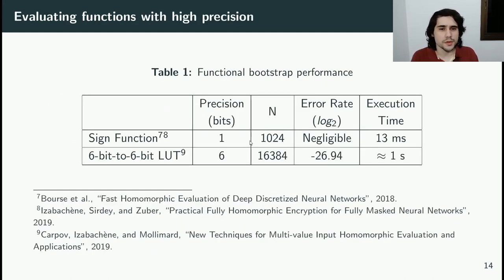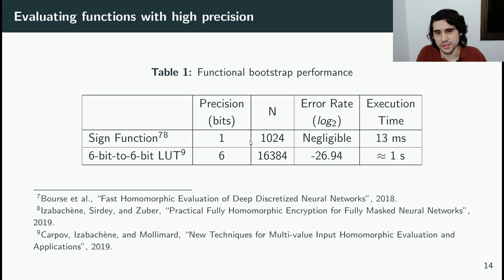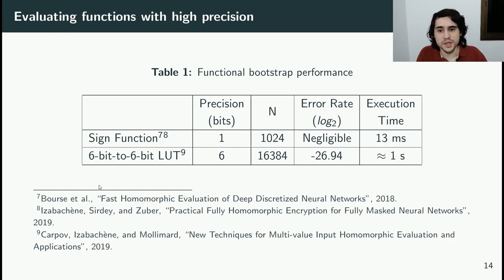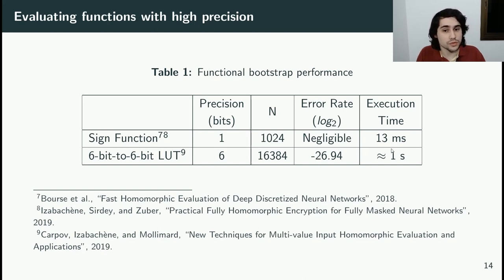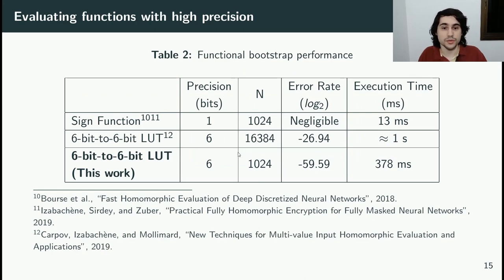The functional bootstrap is a great improvement over logic gates, but still has problems with high precision functions. From the literature, a sign function requiring one bit of precision can be evaluated with a 1024-coefficient polynomial in just 13 milliseconds with negligible error. A 6-bit to 6-bit lookup table, however, requires a polynomial 16 times bigger, takes around one second to evaluate, and has a non-negligible error rate. The execution time grows super-linearly with N, and N grows super-linearly with desired precision. In this work, we introduce new methods to evaluate functions with high precision without increasing the parameters.